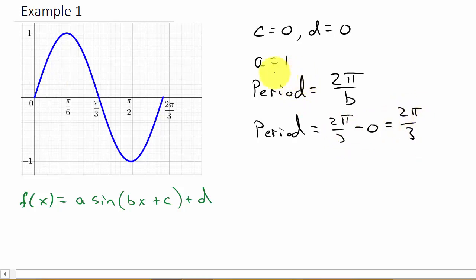We can replace the period with two pi over three. So two pi over three is equal to two pi over b. By finding the length of the period, you just take the largest value minus the smallest value and that gives you the length of the period. So the period is two pi over three, which equals this.